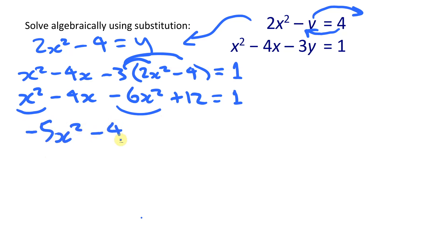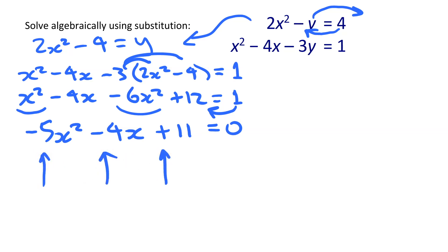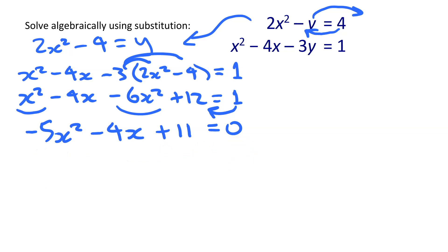Simplifying: x squared minus 6x squared gives minus 5x squared, minus 4x is the only x term, and moving the 1 over gives plus 11, all equal to zero. Since it's easier to work with a positive x squared term, I multiply both sides by negative 1, switching all signs, giving positive 5x squared plus 4x minus 11 equals zero.